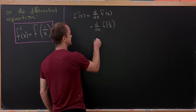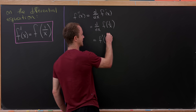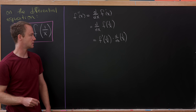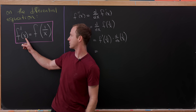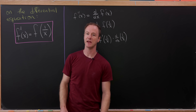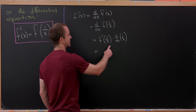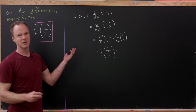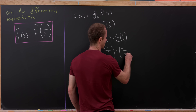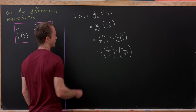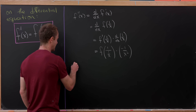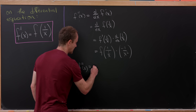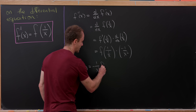Using the chain rule, we get the derivative of f evaluated at 1 over x times the derivative of 1 over x. Our differential equation says that if you take the derivative and plug something in, it's the same as taking the reciprocal and plugging it into the original function. That means we can replace f prime of 1 over x with f of 1 over (1 over x). The derivative of 1 over x is negative 1 over x squared, and 1 over (1 over x) is simply x.